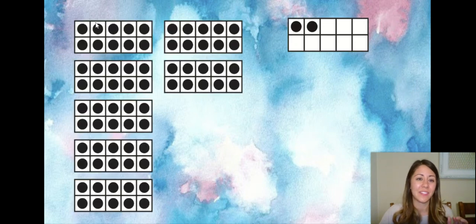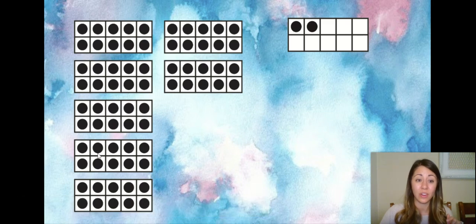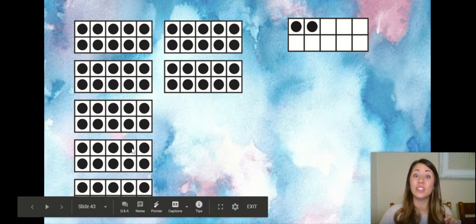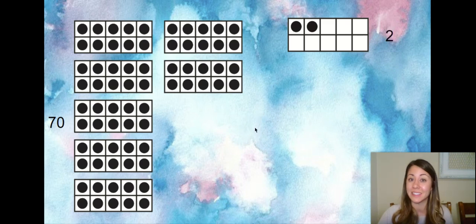Okay, okay, let's check. We know that this is five tens, so 10, 20, 30, 40, 50, two more - 60, 70. Okay, we have 70 tens, or seven tens, that's 70, and we have two extra ones. 70 plus two is the same as 72.